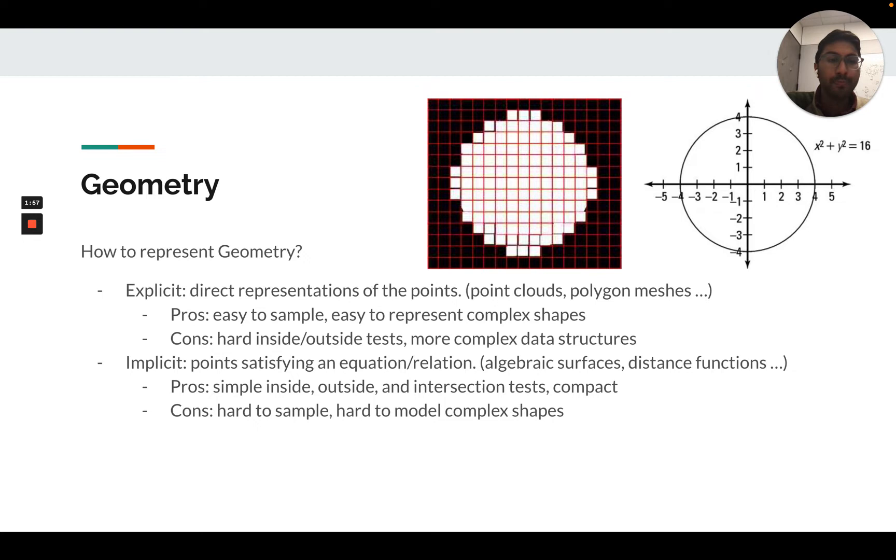Implicit geometric representations are the points where some function is equal to zero, called the zero level set of the function. Those points define the surface. Generally speaking, an implicit representation of a surface is some function with points satisfying that function or equation or relationship.